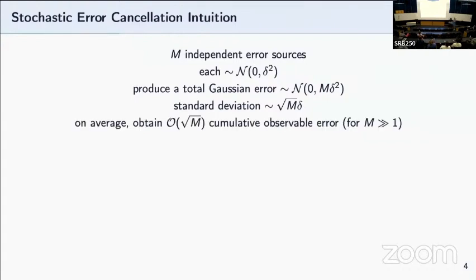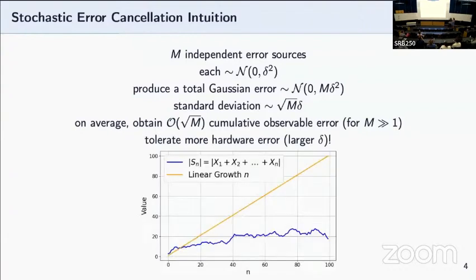Which means that on average, we can obtain around order of square root m cumulative observable error when the number of error sources goes really large. This means that if we fix the cumulative observable error, we can tolerate more hardware error. A simple numerical example is that if we have x's following a standard Gaussian distribution and we sum them together with n of them, take their absolute value, you can see this kind of square root scaling compared to a generic linear growth in n. So this is the general intuition about how the cancellations work.